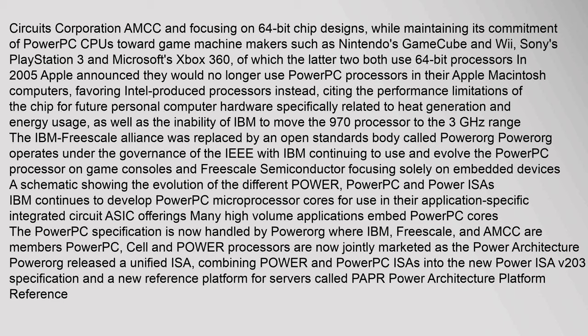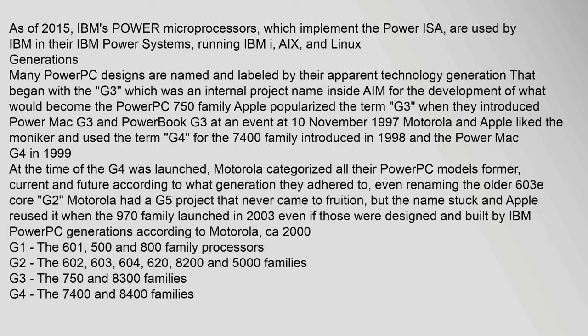Toward the close of the decade, manufacturing issues began plaguing the AIM Alliance — first from Motorola in the 1990s with the PowerPC 7xx and 74xx processors, and IBM with the 64-bit PowerPC 970 processor in 2003. In 2004, Motorola exited the chip manufacturing business by spinning off its semiconductor business as an independent company called Freescale Semiconductor. Around the same time, IBM exited the 32-bit embedded processor market by selling its line of PowerPC products to Applied Micro Circuits Corporation (AMCC), focusing on 64-bit chip designs while maintaining commitment of PowerPC CPUs toward game machine makers such as Nintendo's GameCube and Wii, Sony's PlayStation 3, and Microsoft's Xbox 360. In 2005, Apple announced they would no longer use PowerPC processors, favoring Intel processors instead, citing performance limitations related to heat generation, energy usage, and IBM's inability to move the 970 processor forward.